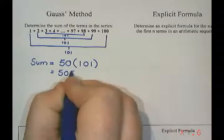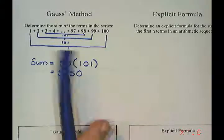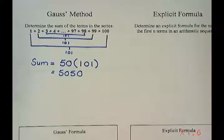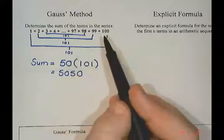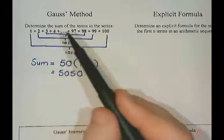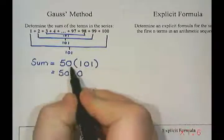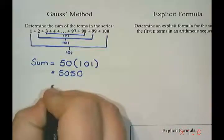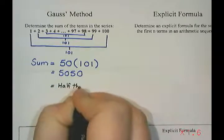So to find the sum of all of these you would take 50 times 101 to get 5050. Now what we want to do is see if we can take what he's done and expand that into some type of a formula. So 50 is half the number of terms. There's 100 terms in the series, so 50 is half the number of terms.